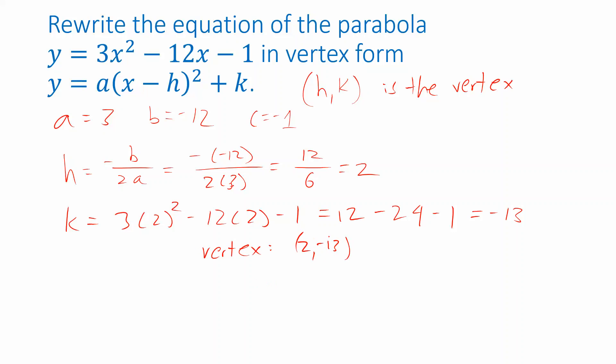So the vertex is at the point 2, -13. And we use the coordinates of that vertex to write down the vertex form of the parabola. The words vertex form refer to the shape of the equation. y = a, we already know that's 3, times (x - h), we just figured out h is 2. That quantity gets squared plus k. k is -13, so I'm just going to write -13.